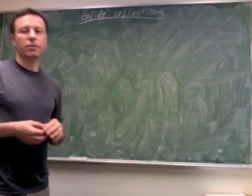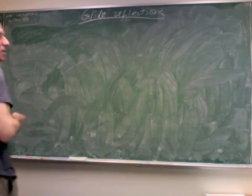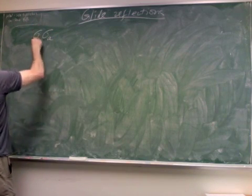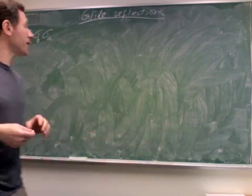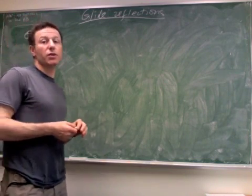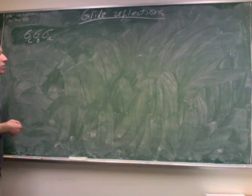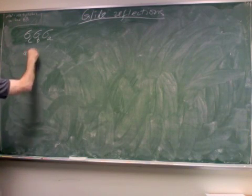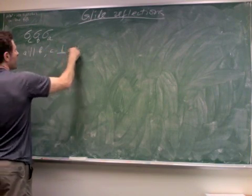So today we'll consider products of three reflections. It seems like it's a complicated case, depending on how lines A, B, and C are situated against each other. But in fact, it all boils down to this key particular case that we will consider first. The simple but key case is when A is parallel to B, and C is perpendicular to both A and B.